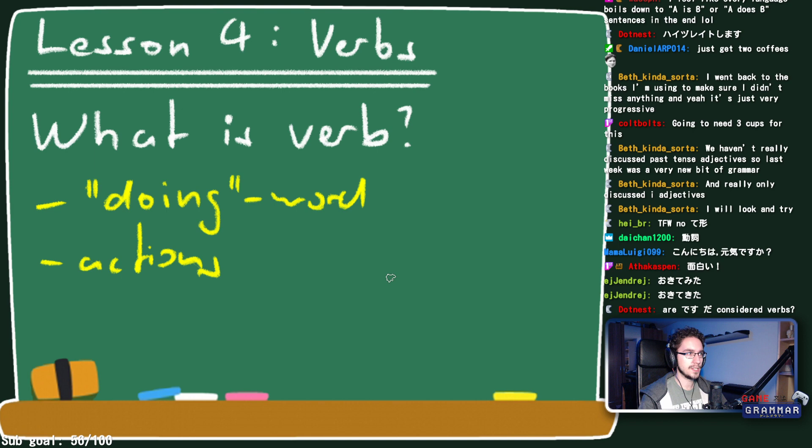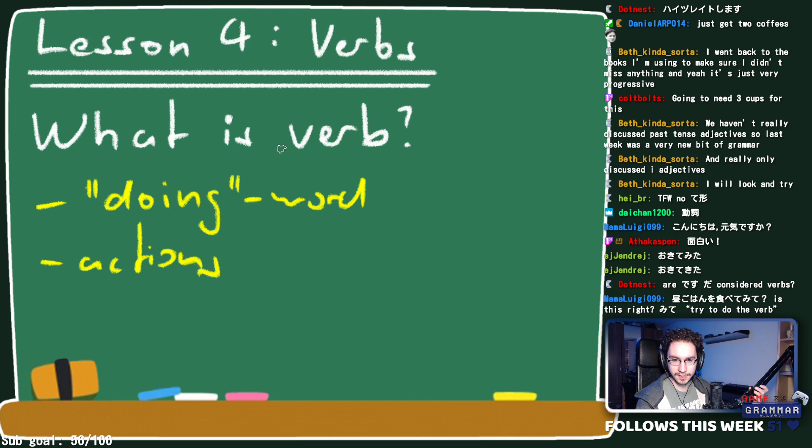The Wikipedia definition even says copulas are usually verbs or verb-like words, so I'd say 'da' and 'desu' fall into the category of verb-like words. For example, 'tabete miru' — 'try and eat' — is a correct use of miru in that auxiliary sense.